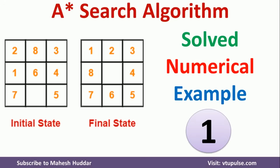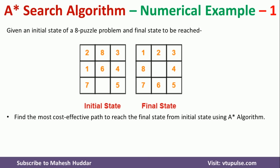Hi, welcome back. In this video, we will try to understand how to use the A-star search algorithm to reach the final state given the initial state. This is solved example 1. In the coming videos, I am going to solve a few more examples related to the A-star search algorithm. The main aim of this problem is to find the most cost-effective path to reach the final state from the initial state using the A-star algorithm.